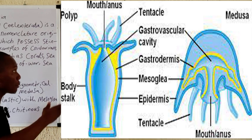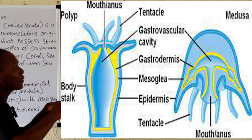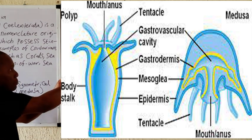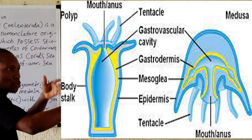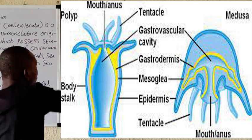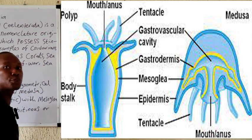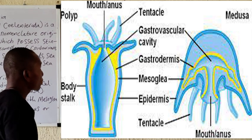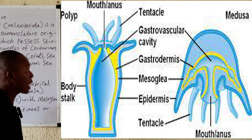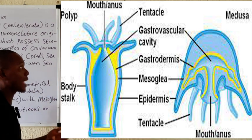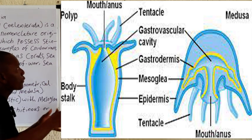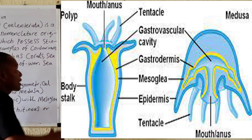The medusa, as shown in the diagram on the board, looks like an umbrella — it's like an inverted polyp. If you take a polyp, make it wider and invert it upside down, you get the medusa form. The medusa also reproduces similarly to the polyp and possesses tentacles. Most of the features present in the polyp are also present in the medusa form.